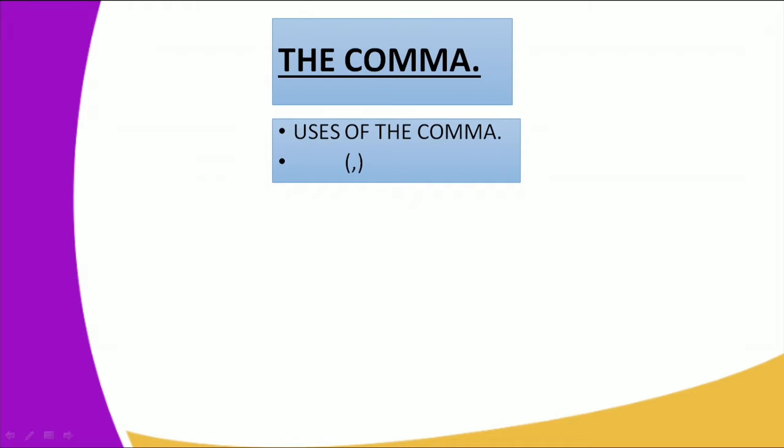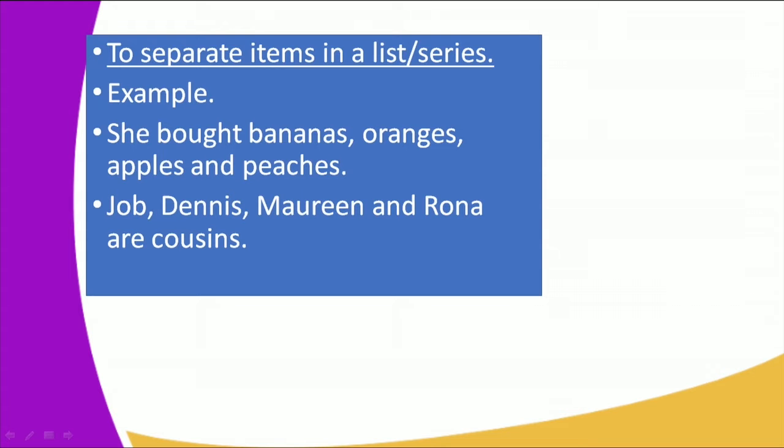The other thing that we're going to look at today is the uses of the comma, otherwise known as the pause. And the first use is to separate items in a list or series. Example: She bought bananas, oranges, apples, and peaches. Next example: Job, Dennis, Maureen, and Rona are cousins.